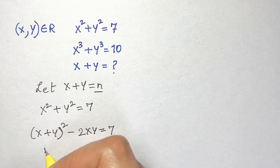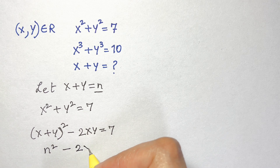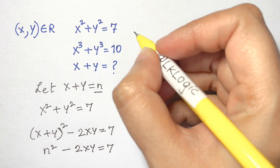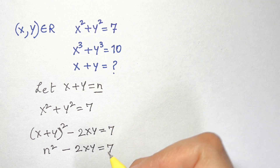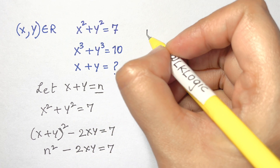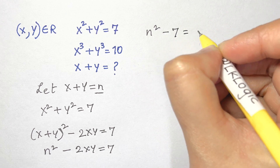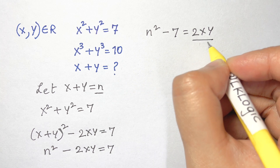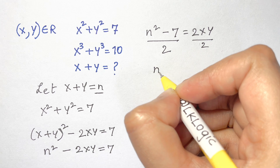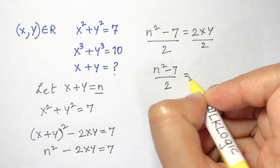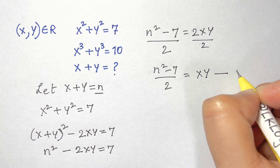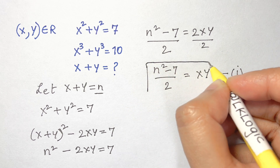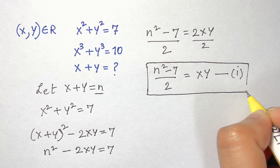Substituting back, we have n squared minus 2xy equals 7. Rearranging, n squared minus 7 equals 2xy, so dividing both sides by 2 gives xy equals n squared minus 7 over 2. Let this be equation 1.